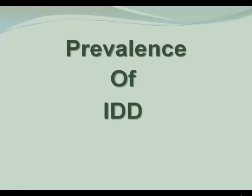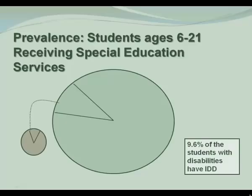First, stop and picture in your mind the Bell Curve. Remember that IDD is on the far left end of the Bell Curve and represents a small percentage of the total population. Out of the whole school population, approximately 10% have disabilities, and out of that 10%, just a little over 1% have IDD. This circle represents the 6 million students with disabilities ages 6 to 21 years, and shows that about 10% of these students have IDD.